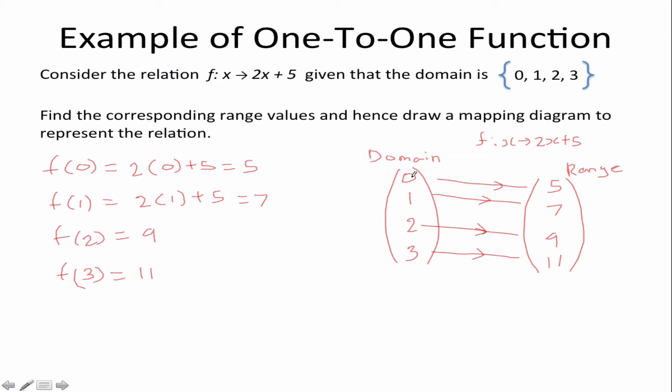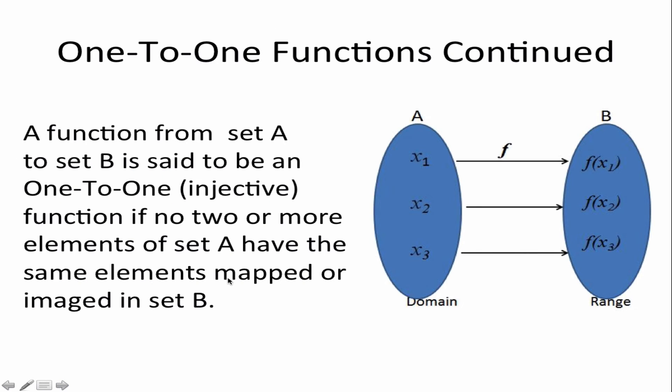So we call this a one-to-one mapping. As you can see every element in the domain has a unique image in the range. There are no crossings, there are no double images. You have only one unique image in your range.